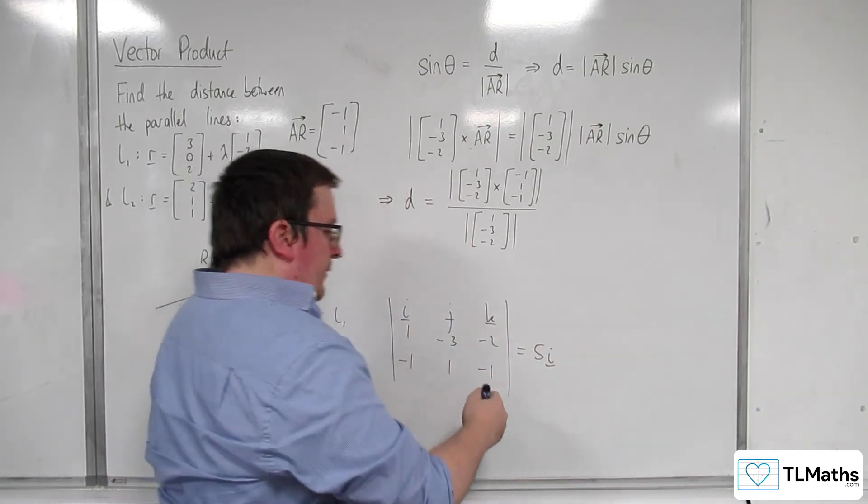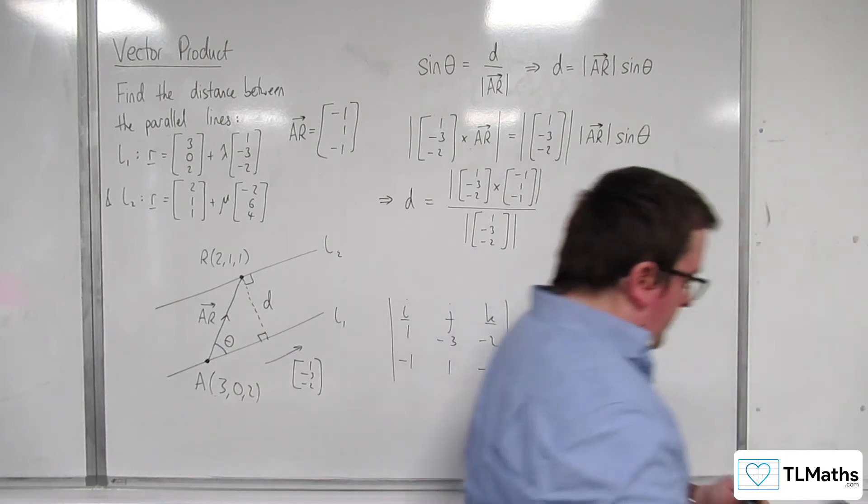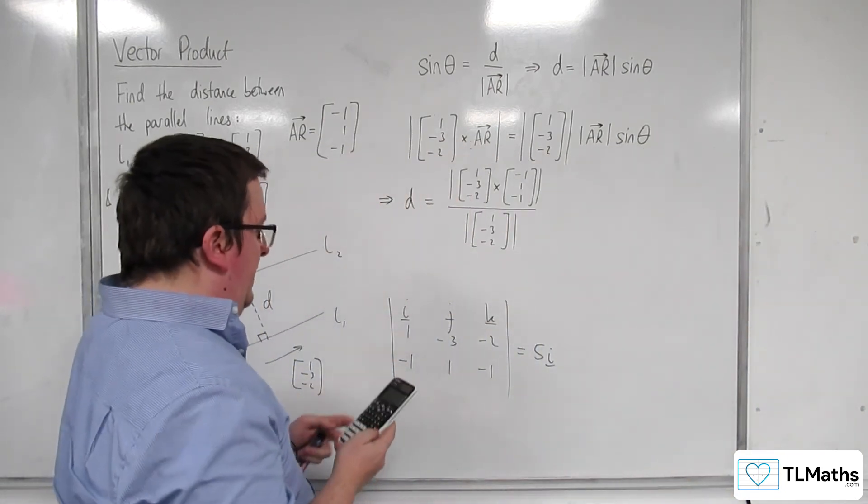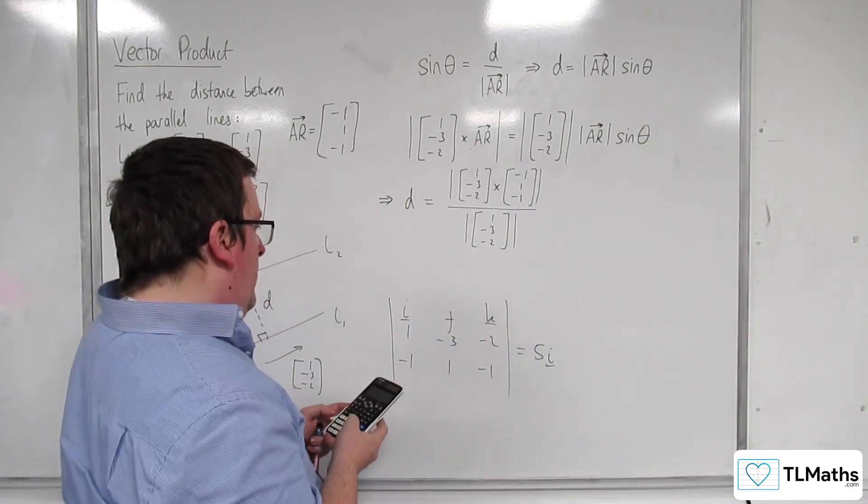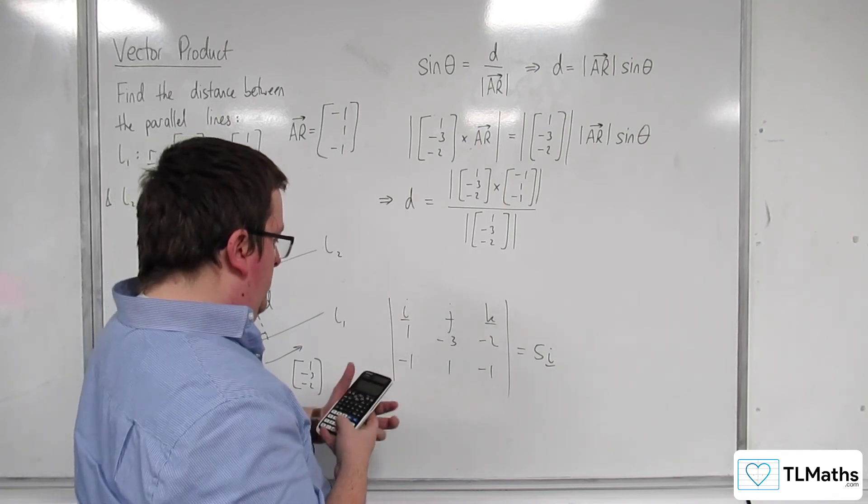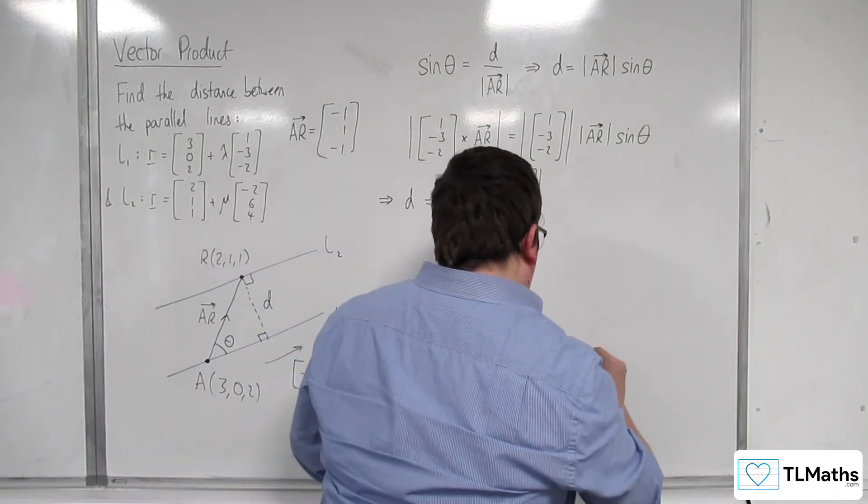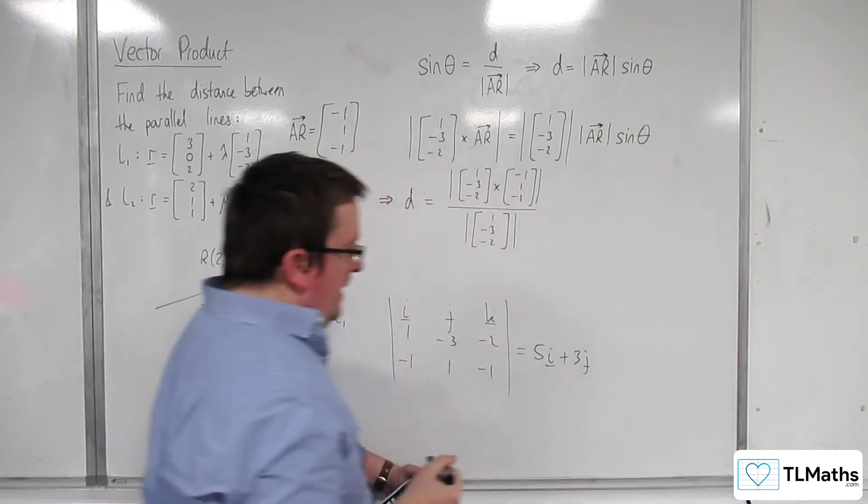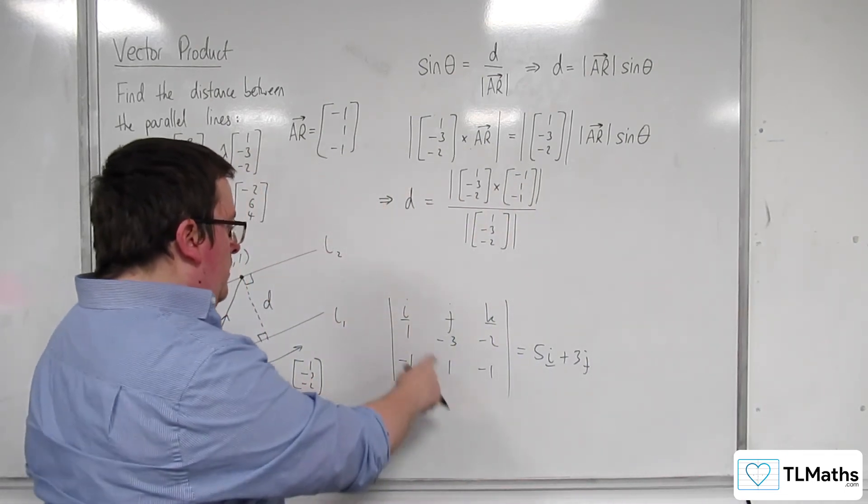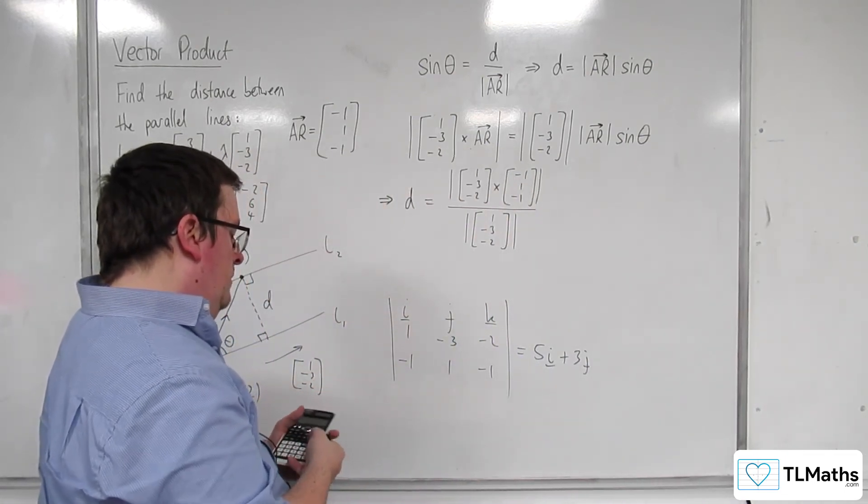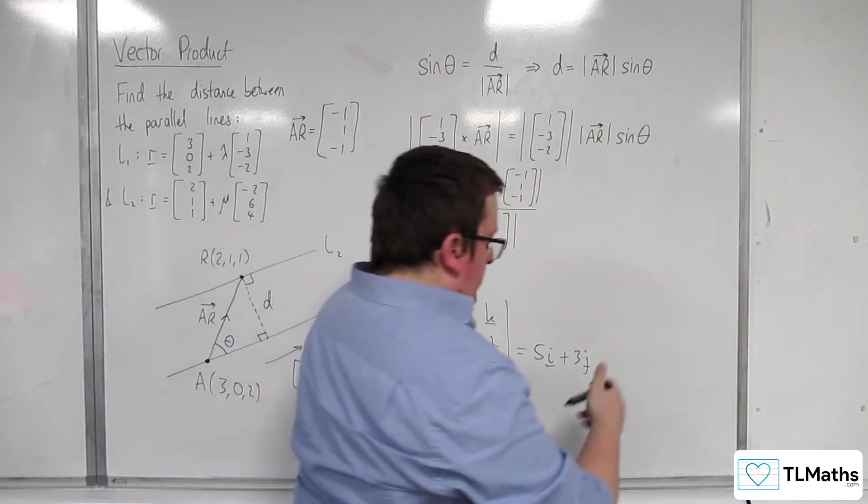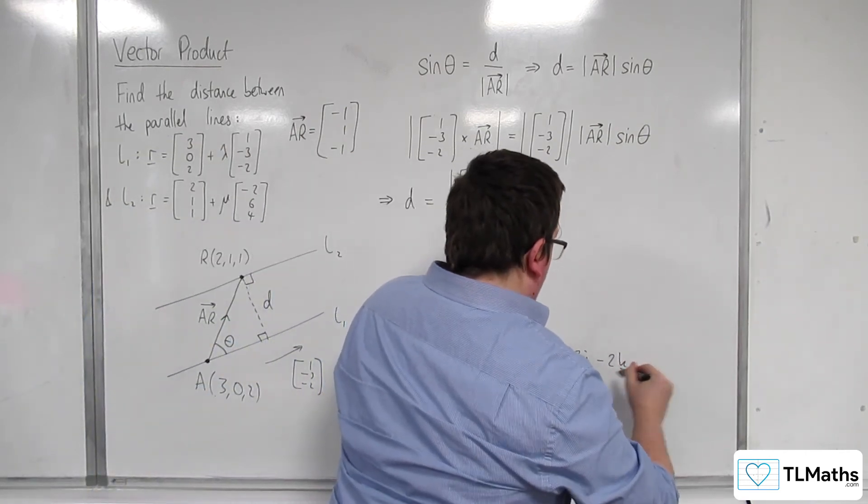Then we've got minus, let's do it on the calculator, so I'm going to avoid making any silly errors here. Minus 1, take away 2, so plus 3 j. And then 1, take away 3, so minus 2 k.